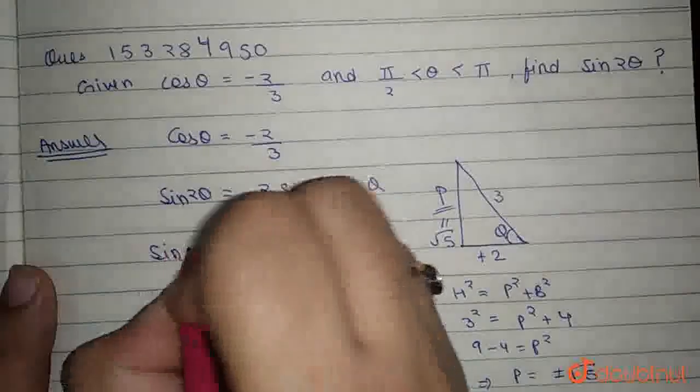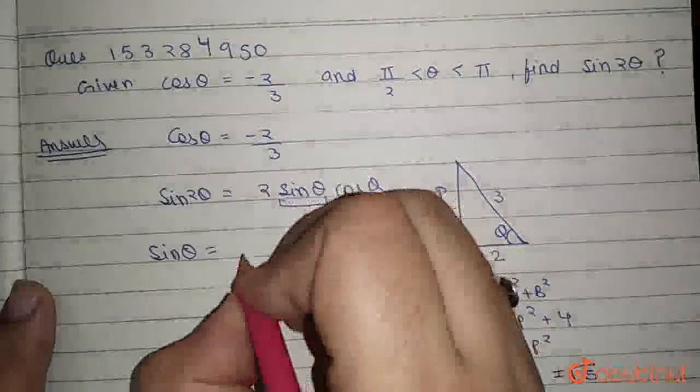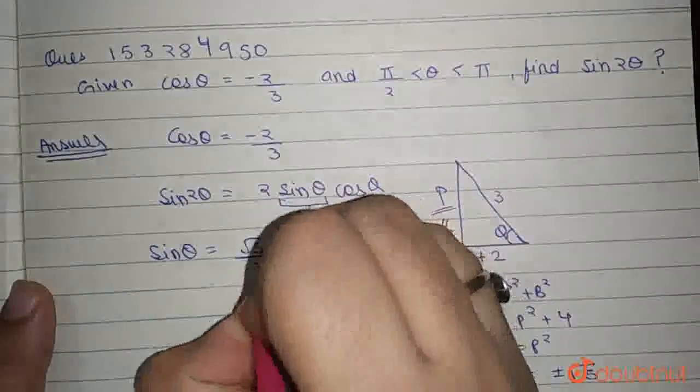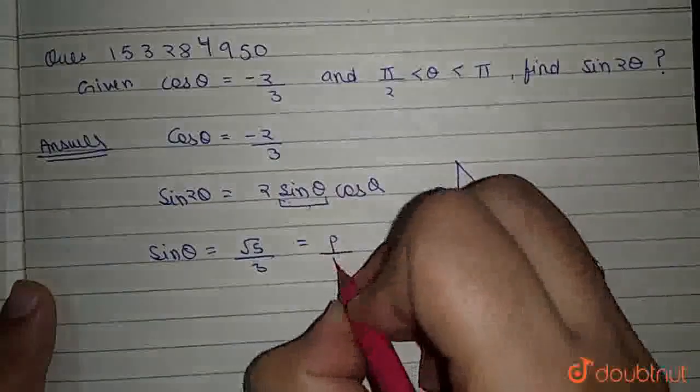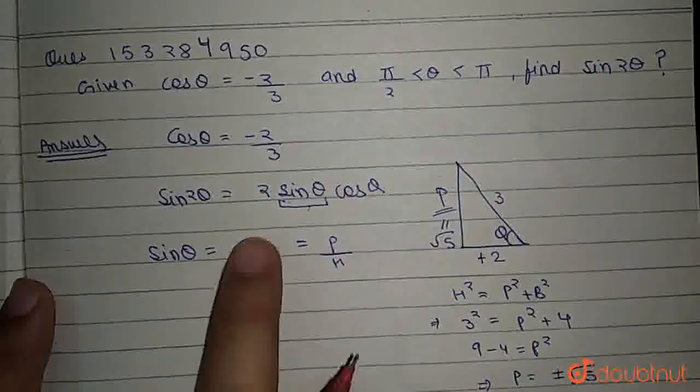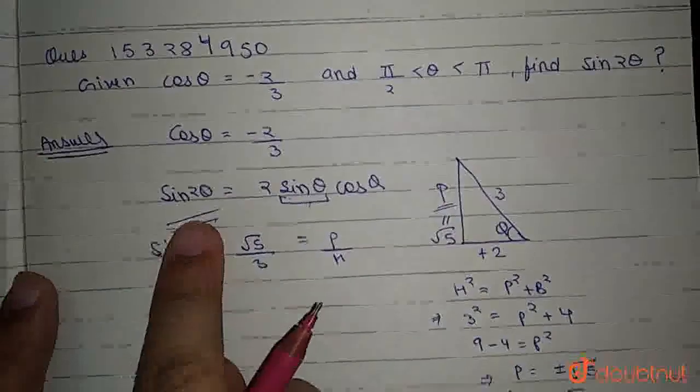So we find the value of sin θ, which is equal to √5/3, which we know as equal to perpendicular upon hypotenuse. So, we have the value of sin θ.